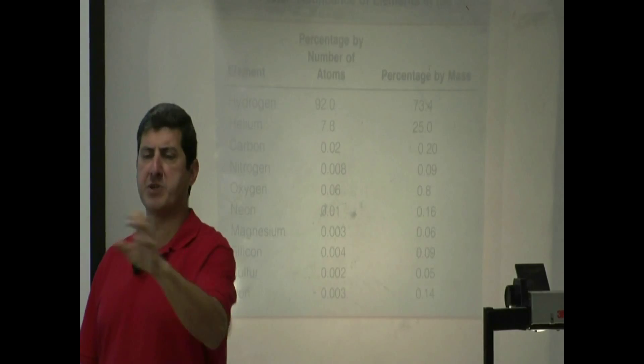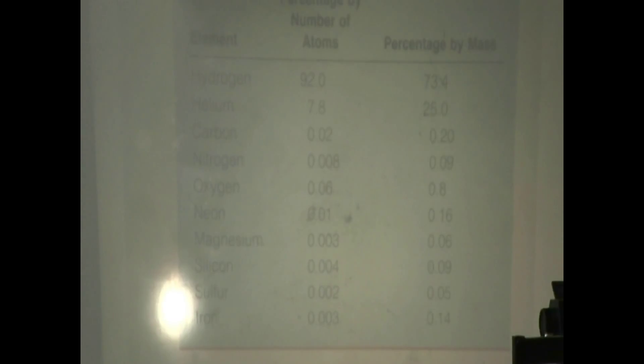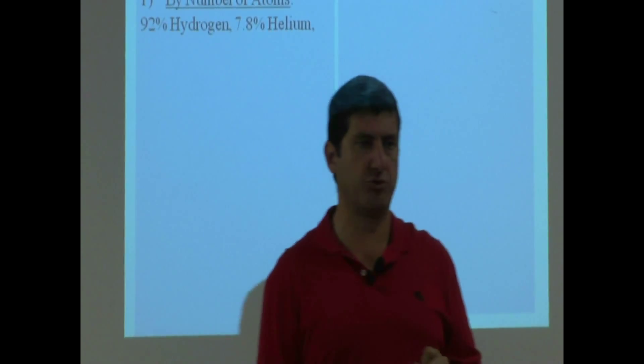So if you say, what percentage of the atoms in the sun are hydrogen? Then the answer will be 92%. So 92% of the atoms of the sun. So that means out of every 100 atoms in the sun, 92 of them are hydrogen.